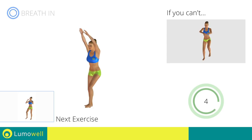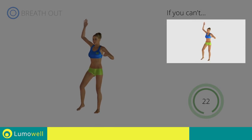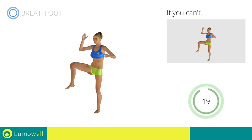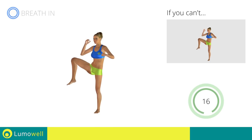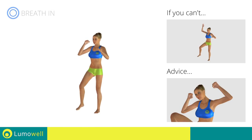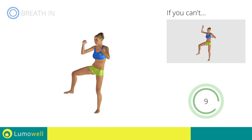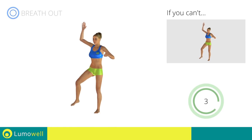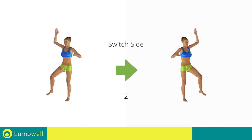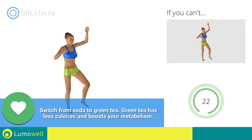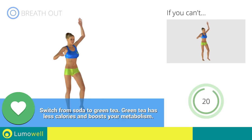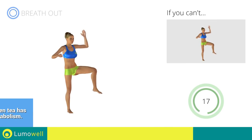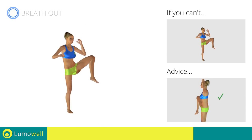Next exercise: standing full side crunch plus side kick. Go! If you cannot do it, try doing standing full side crunch. Don't bend the neck sideways to avoid forcing it. Switch sides in the shortest time possible. Go! Be sure not to lean the bust forward — the shoulders should be in line with your hips.